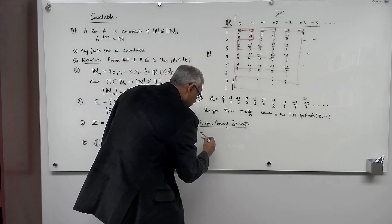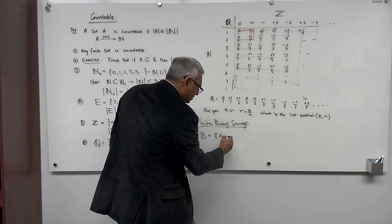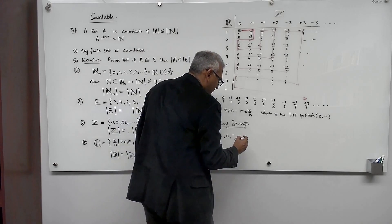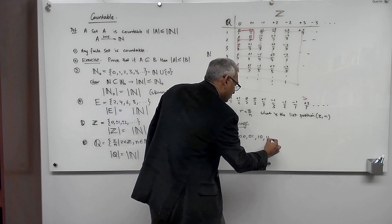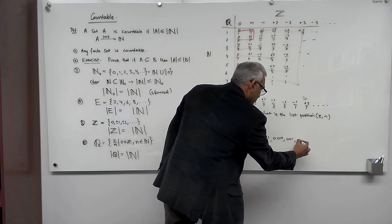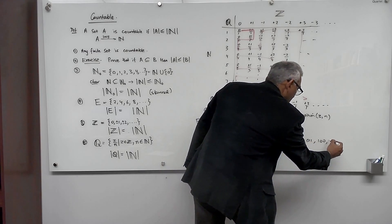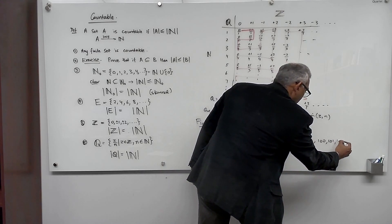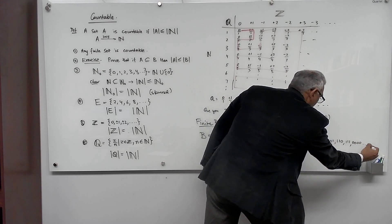So the finite binary strings b is equal to the set. Now we have the empty string. Then we have 0, 1. Then we have 00, 01, 10, 11. Then we have 000, 001, 010, 011, 100, 101, 110, 111, and so on.